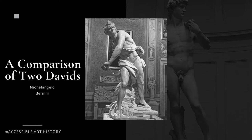Welcome to the Accessible Art History YouTube channel. Today we are going to compare two works of art depicting the same subject. Both Michelangelo and Bernini created sculptures of the biblical figure David during their careers. This video will discuss both their similarities and their differences.